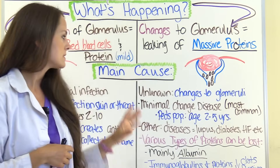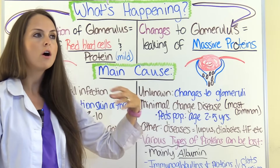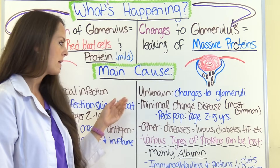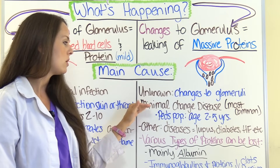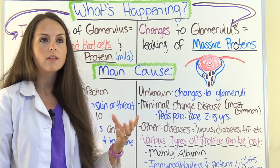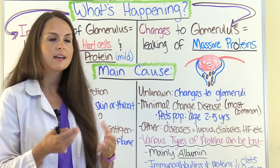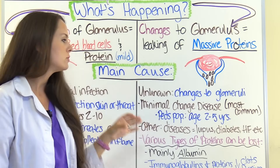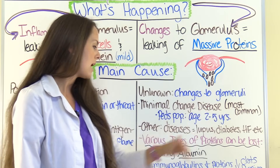With nephrotic syndrome, there are changes to the glomeruli and they're not 100% sure why — it's idiopathic. One of the most common diseases that can cause nephrotic syndrome is called minimal change disease. This is where they biopsy the glomeruli and look at them under an electron microscope, one of the strongest microscopes, and they see changes that are allowing proteins to leak into the urine. It tends to affect the pediatric population ages two to five years old.